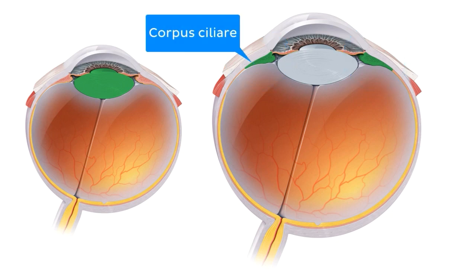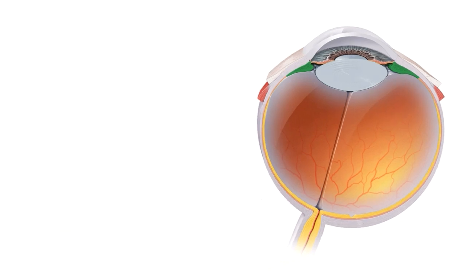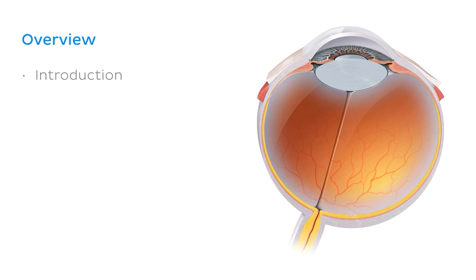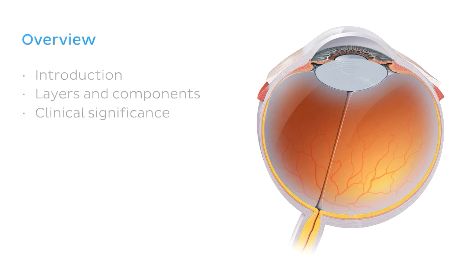The ciliary body is also known as the corpus ciliare in Latin. Now that you have a general idea of what these two structures look like, I'd like to quickly list the topics we'll be discussing. This video will be divided into two parts — first the lens, then the ciliary body. In both parts I'll introduce the structures and talk about their layers and components, and then we'll finish with some clinical correlations.